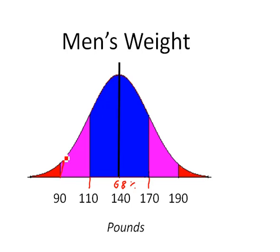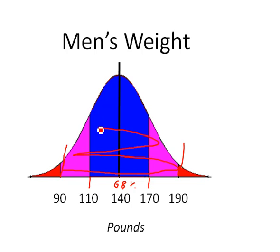Likewise, between a weight of 90 and a weight of 190, we're going to have 95% of the population. That is, 95% of the population exists within two standard deviations of the mean — guaranteed any time you have a normal distribution.